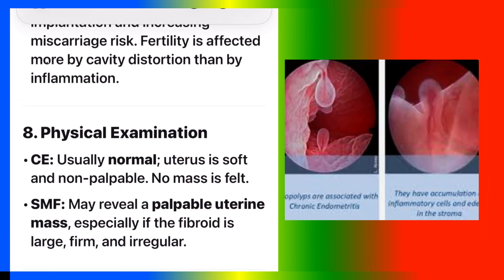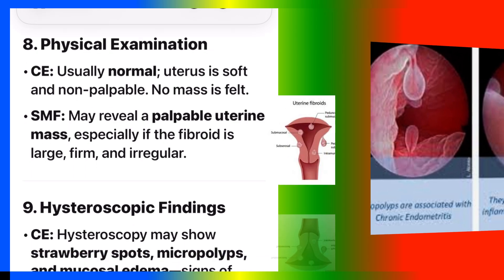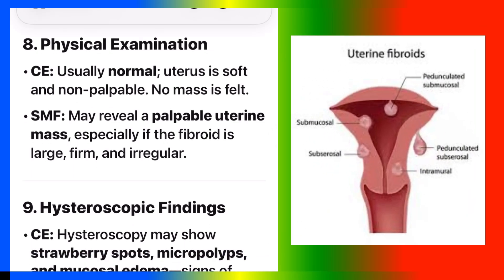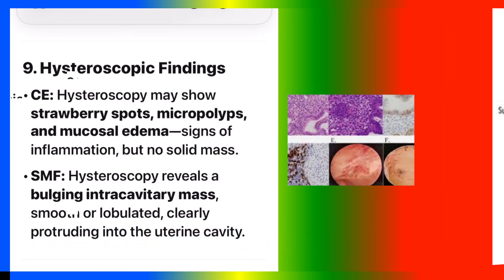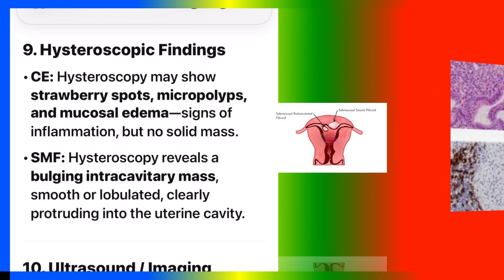Number eight: physical examination. CE is usually normal — the uterus is soft and non-palpable, and no mass is felt. SMF may reveal a palpable uterine mass, especially if the fibroid is large, firm, and irregular. Number nine: hysteroscopic findings. Hysteroscopy in CE may show strawberry spots, micropolyps, and mucosal edema — signs of inflammation but no solid mass. In SMF, hysteroscopy reveals a bulging intracavitary mass, smooth or lobulated, clearly protruding into the uterine cavity.